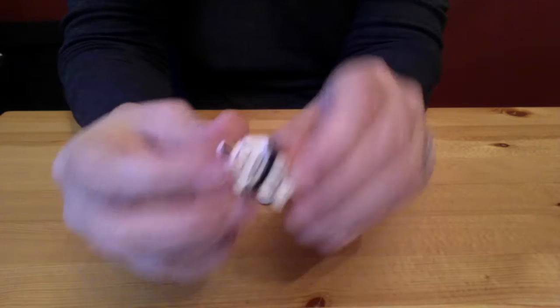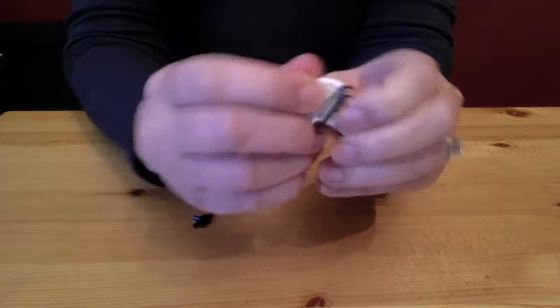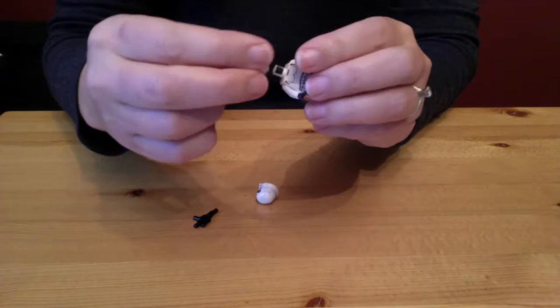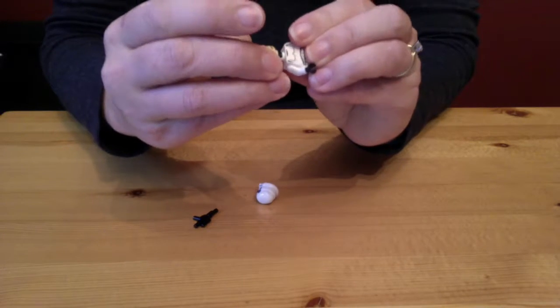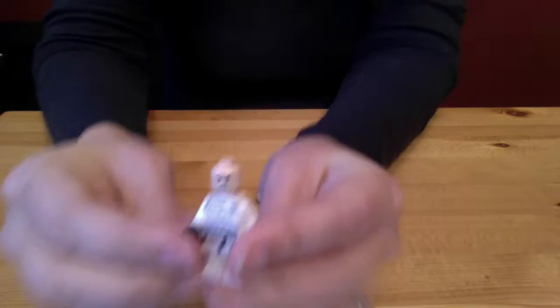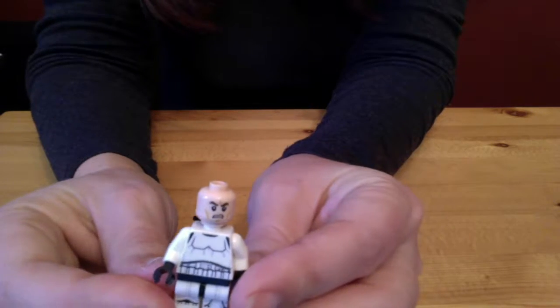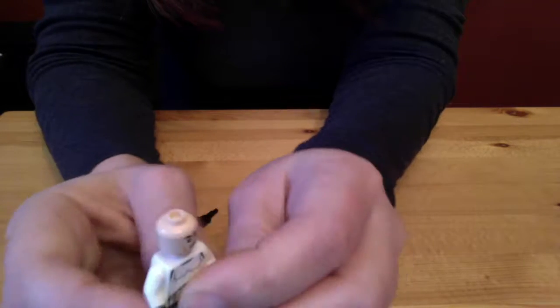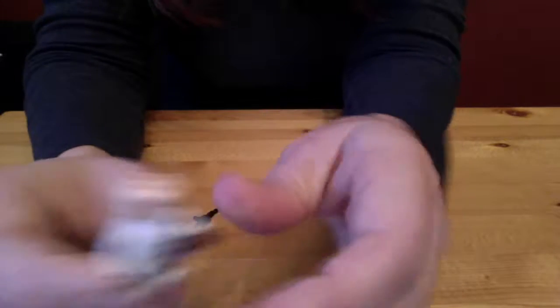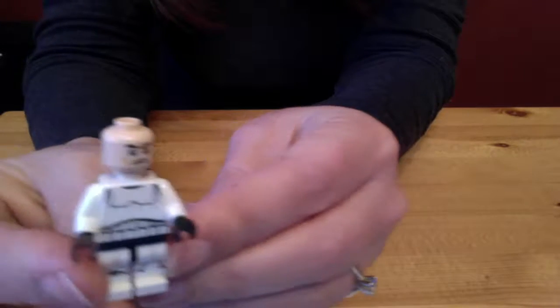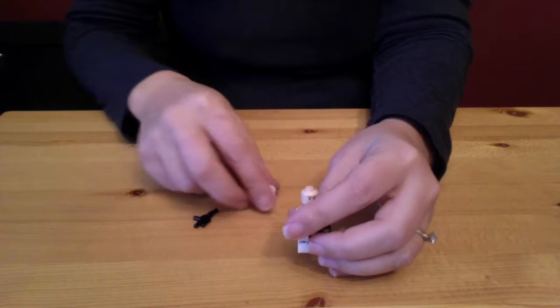Got a headless stormtrooper there. And we know that the stormtroopers are real people. Not robots, they're clones originally and then they end up being people like Finn, taken away from his family. So there we've got that.